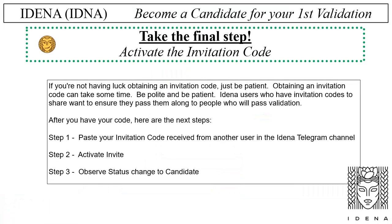Observe my current task for next steps. Take the final step: activate the invitation code. If you're not having luck obtaining an invitation code, just be patient. Obtaining an invitation code can take some time — be polite and be patient. IDNA users who have invitation codes to share want to ensure they pass them along to people who will pass validation. After you have your code, here are the next steps. Step 1: paste your invitation code received from another user in the IDNA Telegram channel. Step 2: activate invite. Step 3: observe status change to candidate. Here is an example found on idna.site.